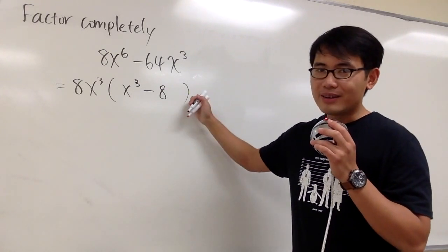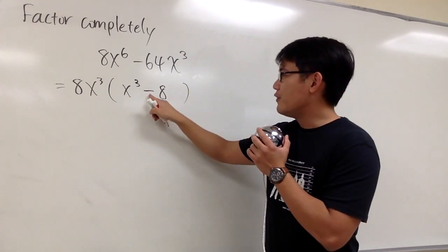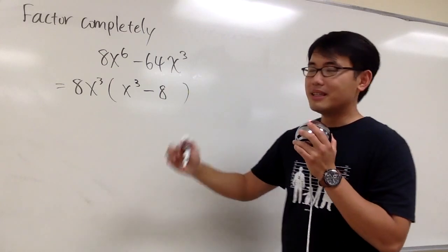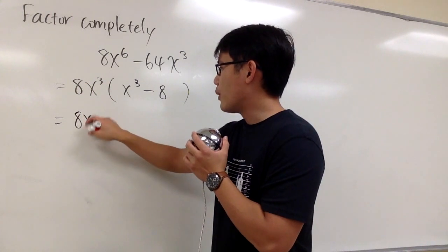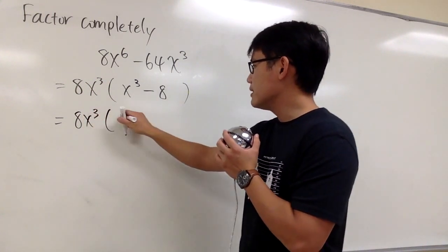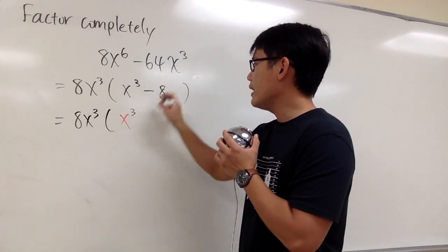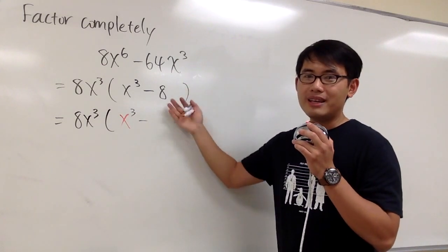And then to factor this out, this is going to be a difference of 2 cubes. Keep in mind, keep writing down the 8x to the 3rd power in the front. But then for this is x to the 3rd power and then minus what times what times what would be 8?